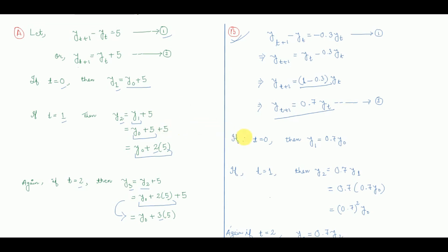If we put t equal to 0, equation number 2 becomes y1 equals 0.7y0. Then if we put t equal to 1, equation number 2 becomes y2 equals 0.7y1. Since y1 is already calculated as 0.7y0, we get y2 equals 0.7 × 0.7y0, which equals 0.7² y0.